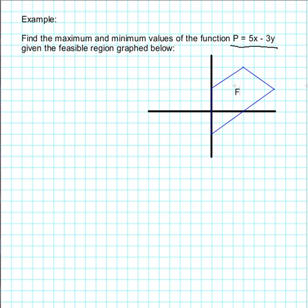So remember, our optimum values will be at the vertices. This vertex has coordinates (0,2). This vertex has coordinates (3,4). At this vertex, our coordinates are (6,2). And at this vertex, our coordinates are (0,-2).